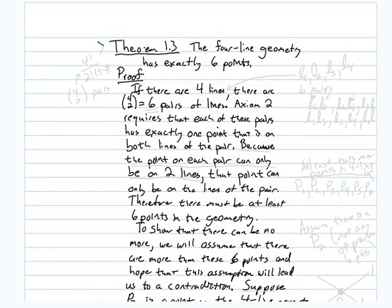Moving on to theorem 1.3: the four-line geometry has exactly six points. To prove this from the axioms — axiom 1 says there are four lines, and axiom 2 says any two distinct lines have exactly one point on both of them. Given four lines, there are six pairs of lines, because there are four-choose-two pairs — that's four factorial over two factorial times two factorial, which equals six.